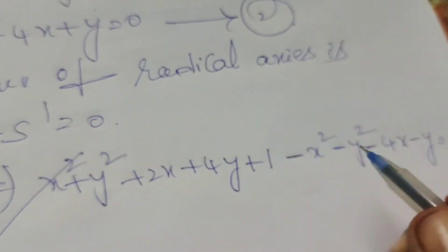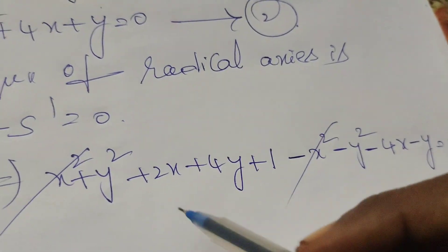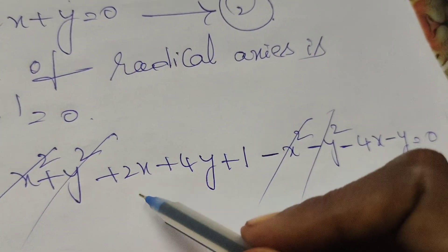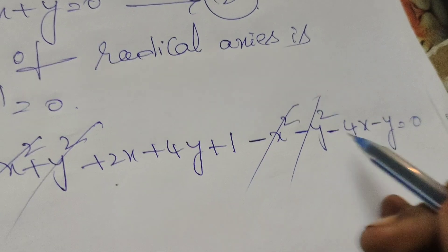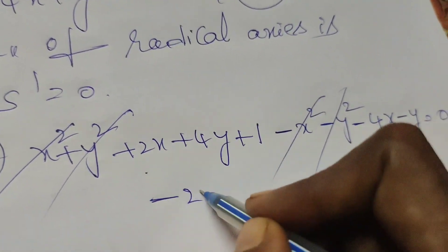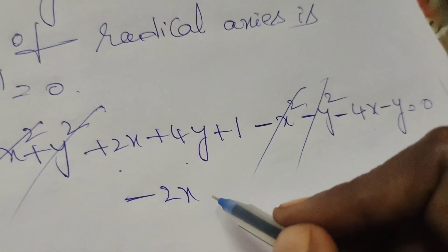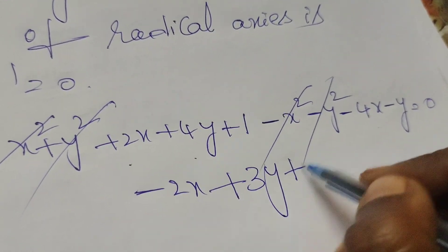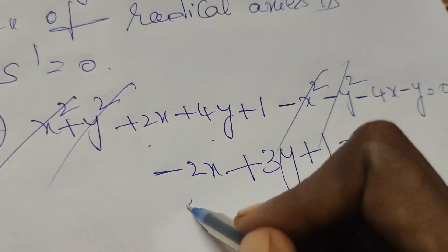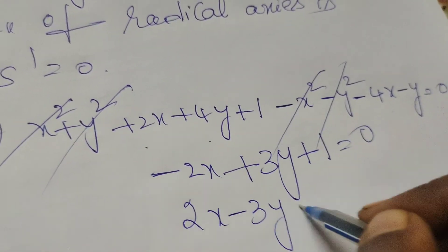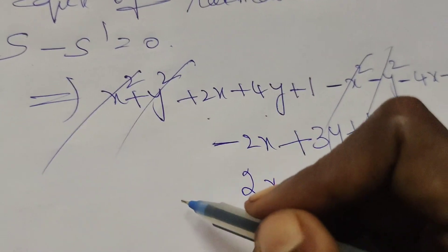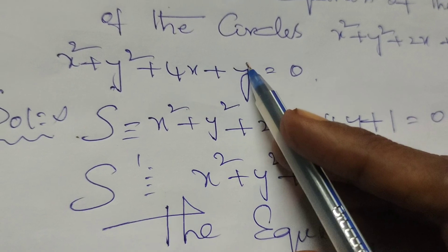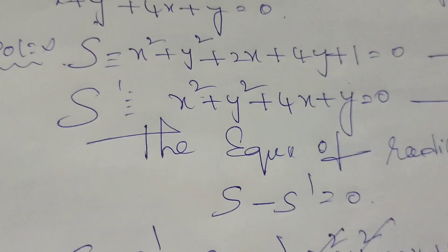Here, x² minus x² gets cancelled, y² minus y² gets cancelled. Next, 2x minus 4x means minus 2x. Next, 4y minus y means plus 3y. Next, plus 1 equals to 0, giving us 2x minus 3y minus 1 equals to 0. This is the radical axis equation of the given two circles. Thank you.